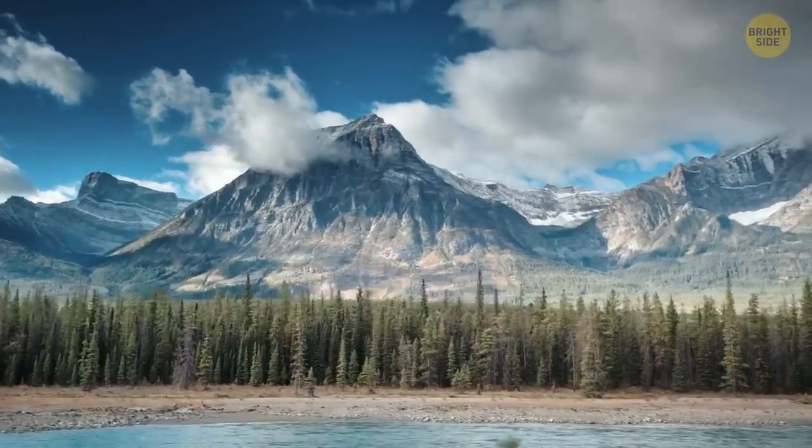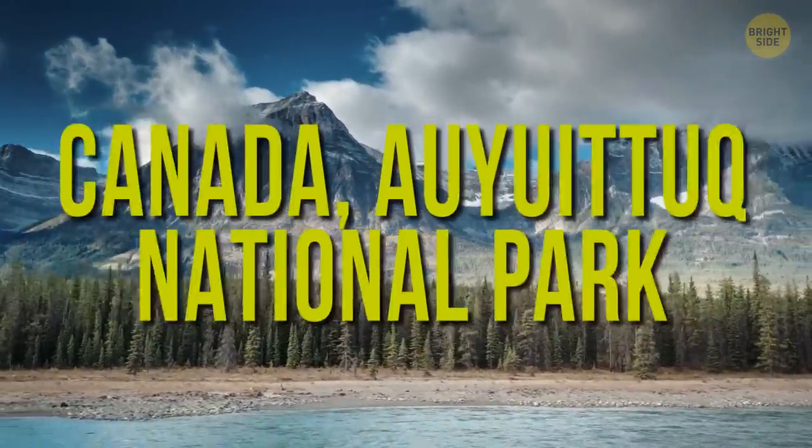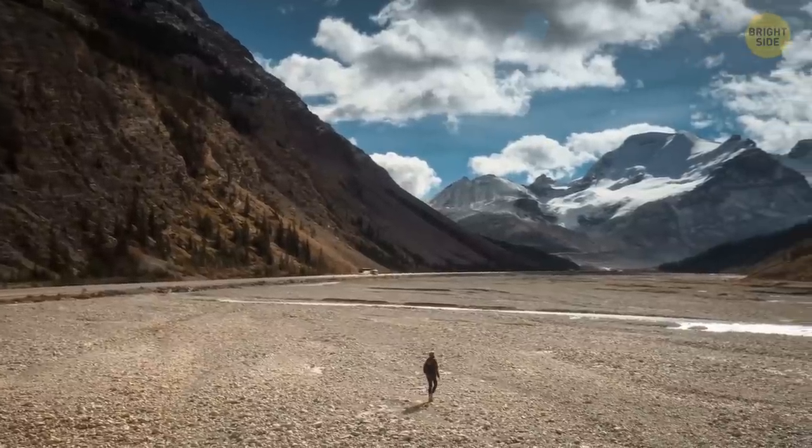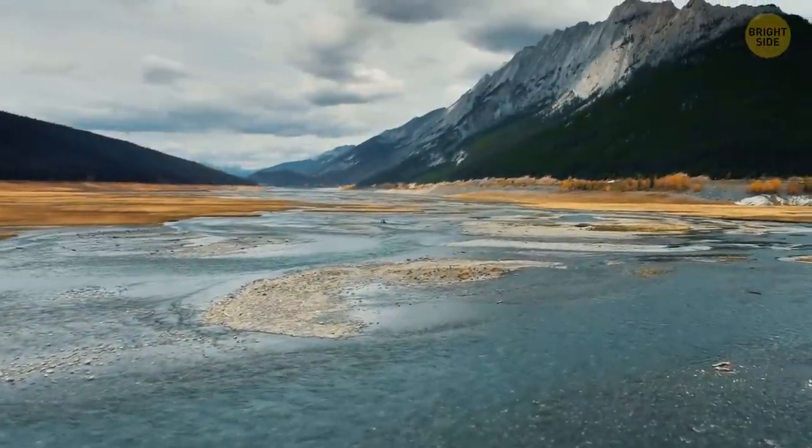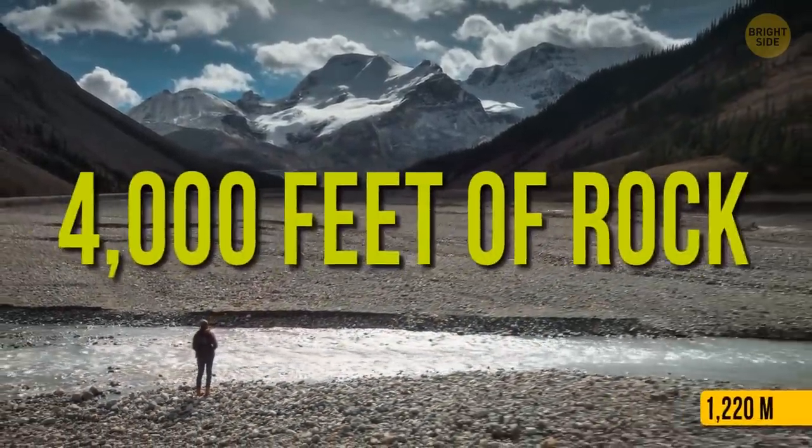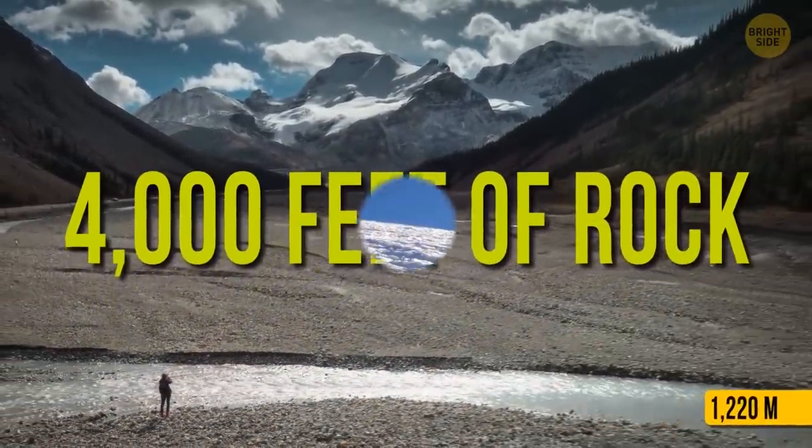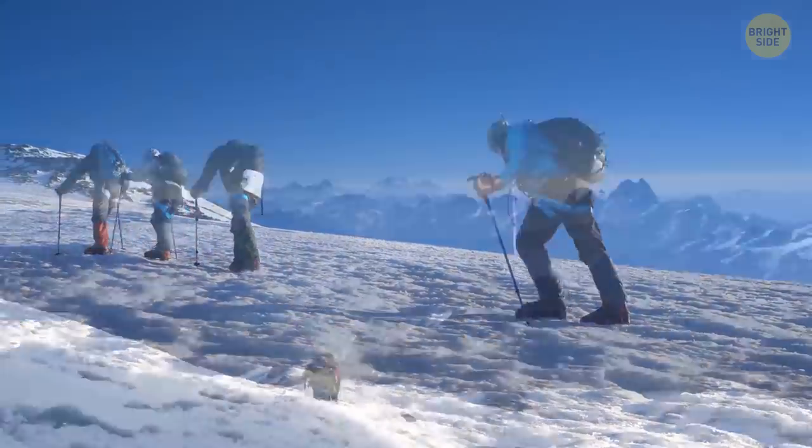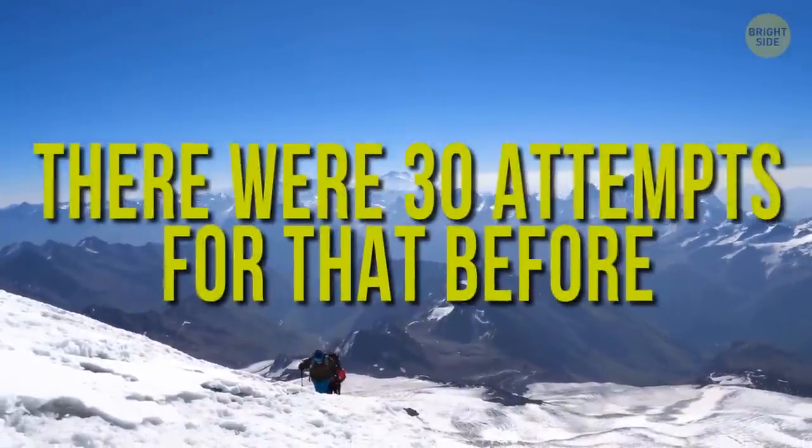If you want to see some pretty steep rocks, go to Canada, Aoyuituk National Park. It has the biggest vertical drop in Canada, the tallest and the steepest cliff, with 105 degrees of overhang and 4,000 feet of rock. A team of four American men finally made it to the top in 1985. Although, there were 30 attempts for that before. It took them 33 days to get up.